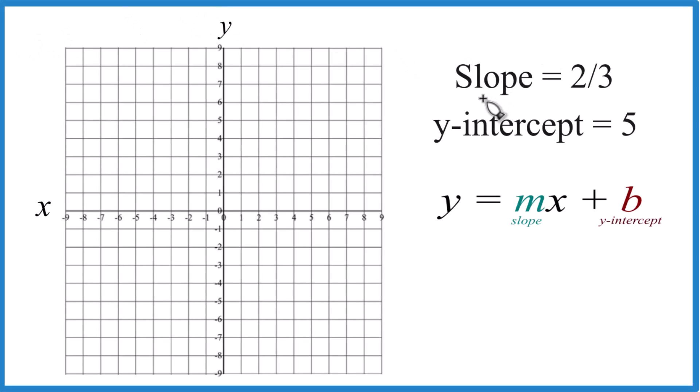So if you need to write the graph for a line where you have the slope two-thirds and the y-intercept five, here's how you do it.